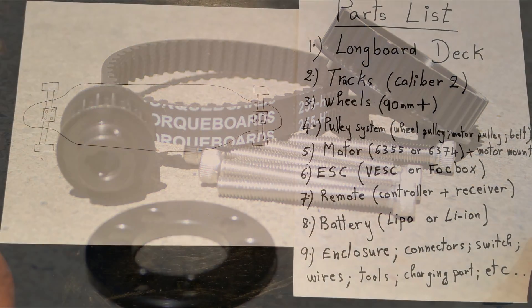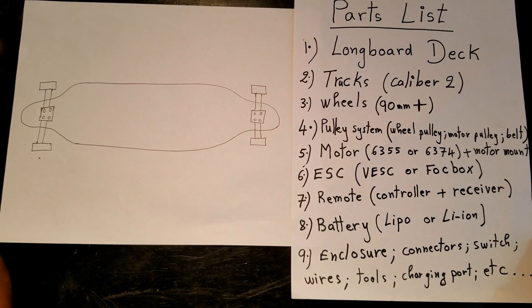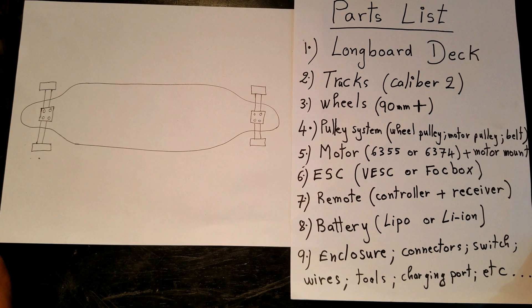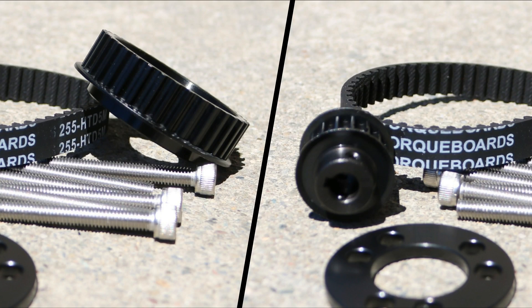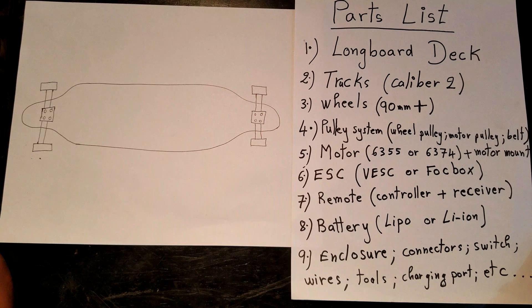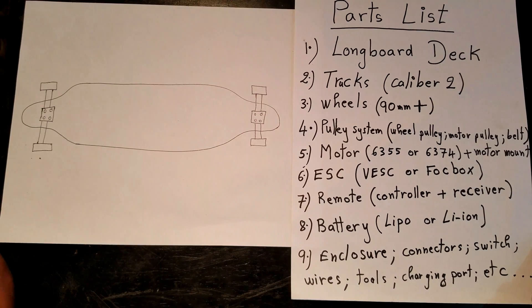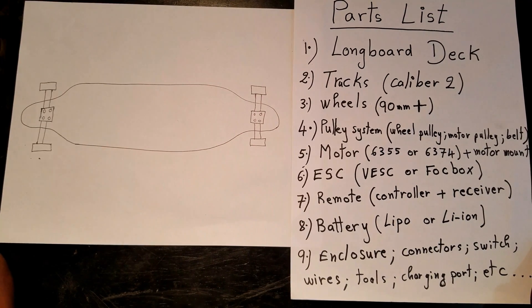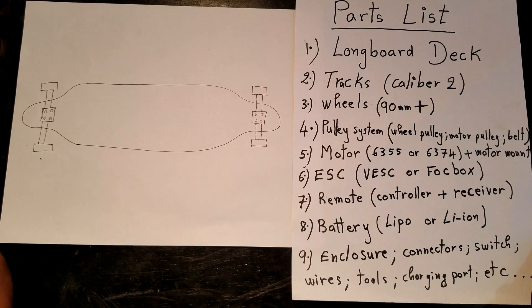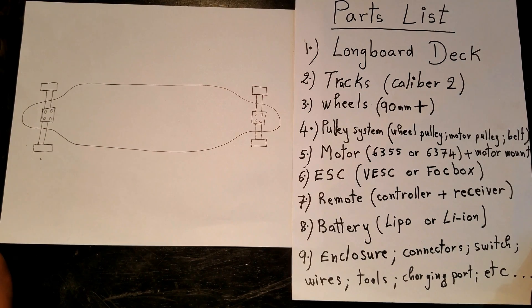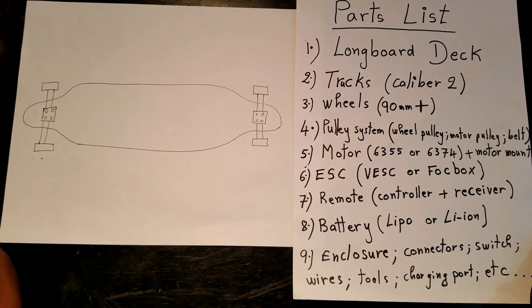It's up to you to decide what gearing you want to use. I'm using a wheel pulley of 36 teeth and a motor pulley of 16 teeth. You can decide to go with 15 teeth and 36. Note that the gearing ratio affects the speed and the torque.